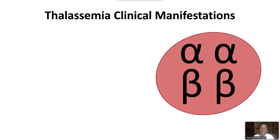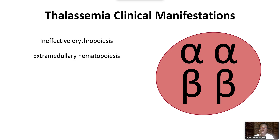Unpaired alpha or beta globin chains are not soluble in the red blood cell's cytoplasm. Therefore, they precipitate, causing cellular damage. Thus, red blood cell maturation is impaired, leading to clinical manifestations of ineffective erythropoiesis and extramedullary hematopoiesis. Clinical findings include microcytosis, hemolytic anemia, and iron overload.